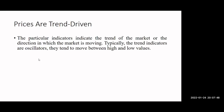The particular indicators indicate the trend of the market or the direction in which the market is moving. Typically, the trend indicators or trend direction in which the market is moving can be seen through the oscillator, or they tend to move between the high and low values. So now we are going to see what actually the upward trend is.